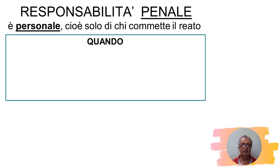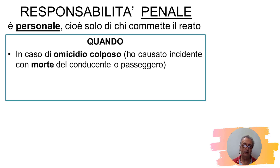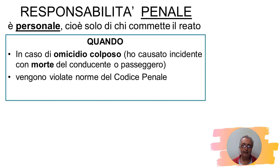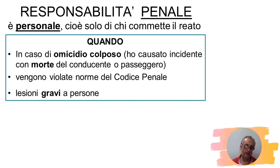Responsabilità penale: è personale, di chi ha commesso il fatto o il reato. Quando c'è responsabilità penale? È un omicidio colposo: ho fatto un incidente con morte del conducente o dei passeggeri dell'altro veicolo. Oppure quando vengono violate le norme del codice penale, o quando si provocano lesioni gravi a persone. Attenzione: lesioni gravi, non lievi, perché se le lesioni sono lievi ci sarà comunque solo responsabilità civile.